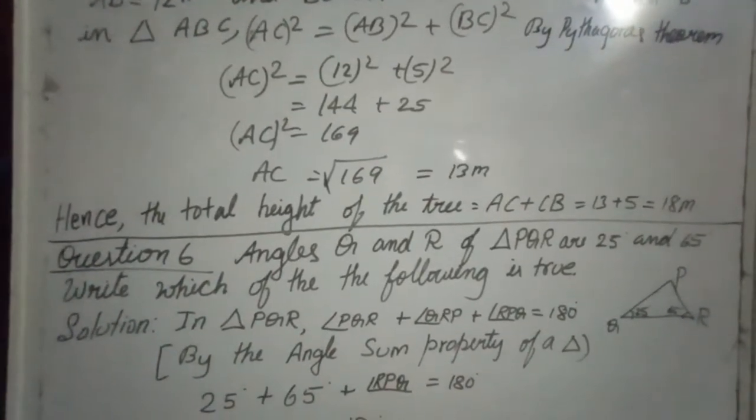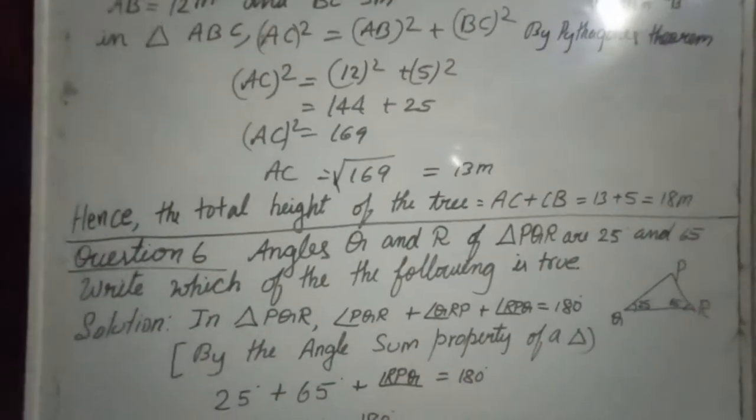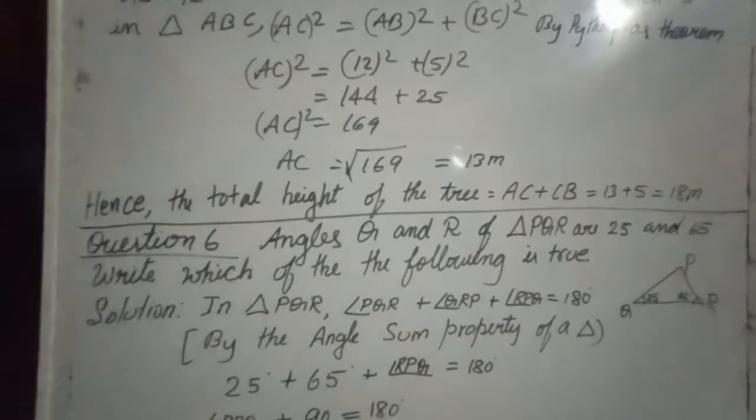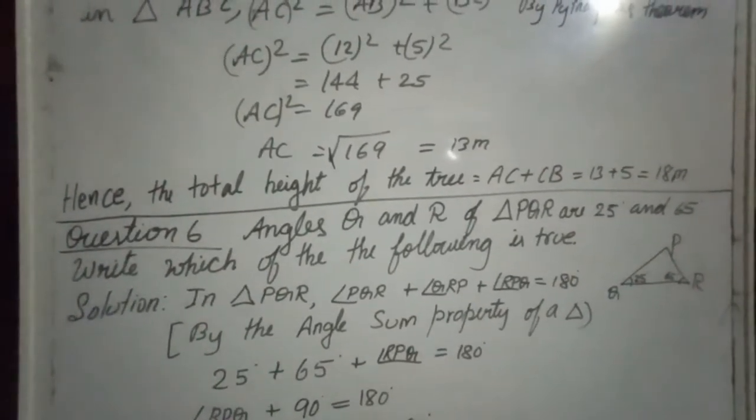So 25 degree plus 65 degree plus angle P is equal to 180 degree. Angle P plus 90 degree is equal to 180 degree. Whatever we have to shift to the other side.